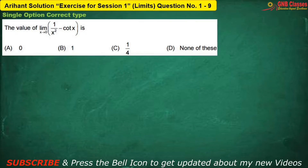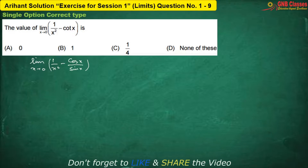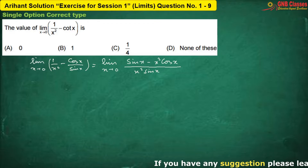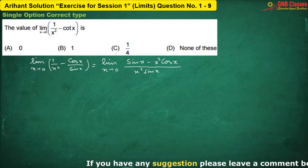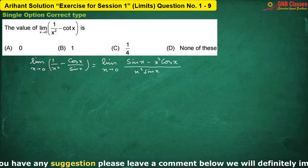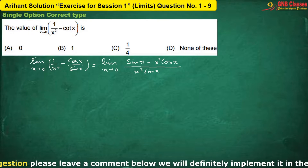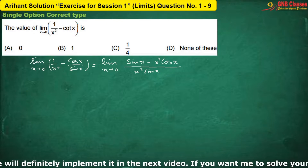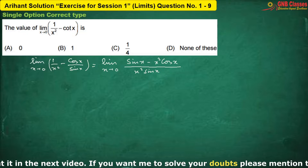In this problem, let me simplify by writing cot x in terms of cos x by sin x. After taking LCM we get a simplified expression. If I put the limiting value we get 0 by 0 form, so we can apply L'Hôpital's rule. However, since we have done three sums applying L'Hôpital's rule, in this case I am using the expansion method instead.